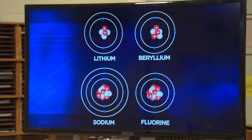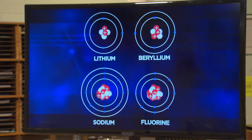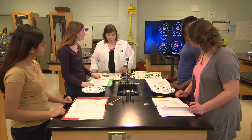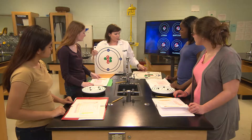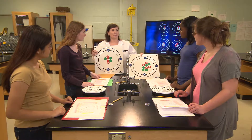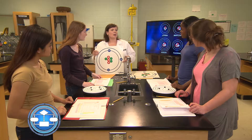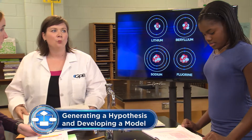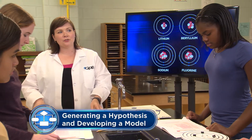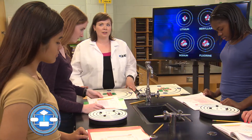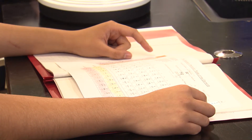Let's look at the Bohr models of several elements. Please have your periodic table nearby. Remember, Bohr's the guy who determined the energy levels of the atoms. I created a Bohr model of lithium and beryllium using these model kits, but I could have drawn them too, like you see on the monitor. First, look at your periodic table. What patterns do you see between the location on the periodic table and the models of these different atoms? Talk to each other about what you see.